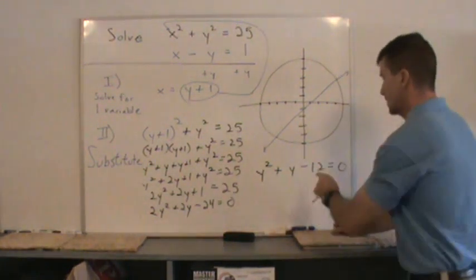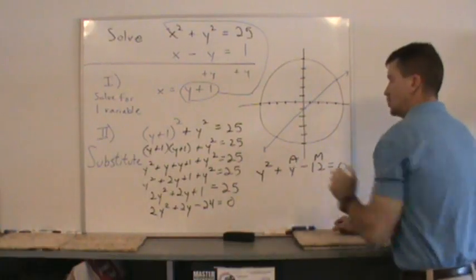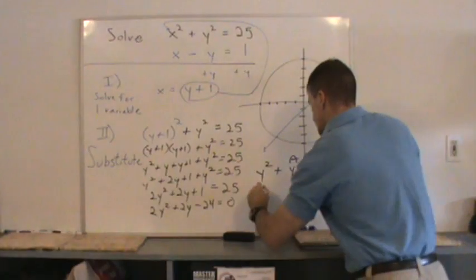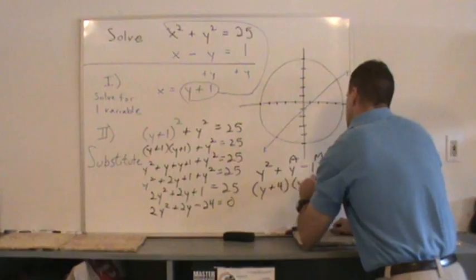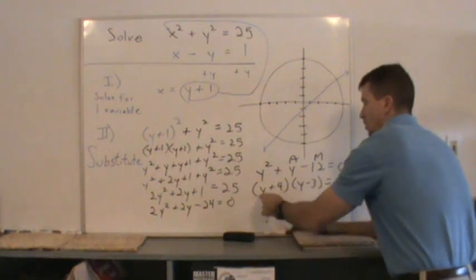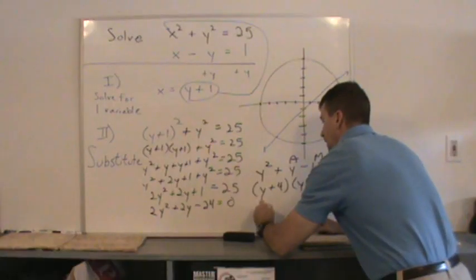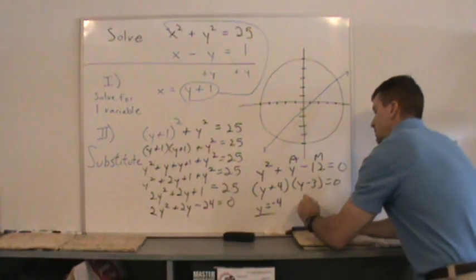And now I can factor that. Two numbers that multiply to negative 12 that add up to a 1: y plus 4, y minus 3. And I'll solve each one of these factors. Y plus 4 equals 0, y equals negative 4. And solve for y here. Y minus 3 equals 0, y equals 3.